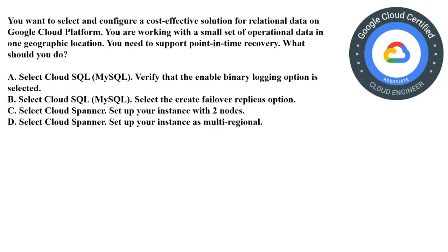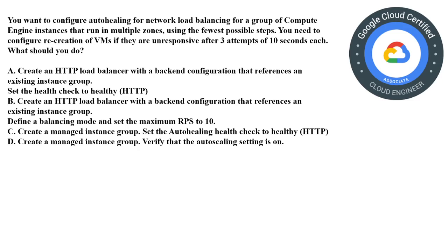Moving on to the next question. You want to select and configure a cost-effective solution for relational data on Google Cloud Platform. You are working with a small set of operational data in one geographic location. You need to support point-in-time recovery. The options are: A) Select Cloud SQL, verify that the enable binary logging option is selected; B) Select Cloud SQL, select the create failover replicas option; C) Select Cloud Spanner, set up your instance with two nodes; D) Select Cloud Spanner, set up your instance as multi-regional. The correct answer is option A: select Cloud SQL and verify that the enable binary logging option is selected.